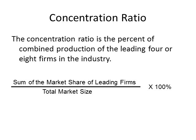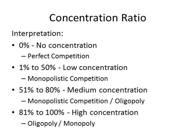The concentration ratio is the percent of combined production of the leading four or eight firms in the industry. The formal formula is the sum of the market share of the leading firms divided by the total market size, times 100%. Once calculated, we compare the result with a known set of values.